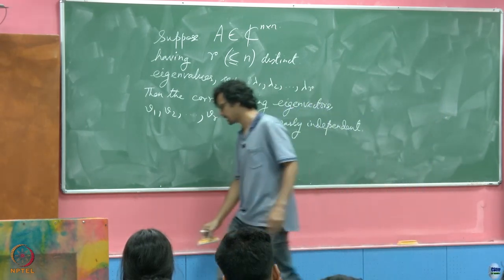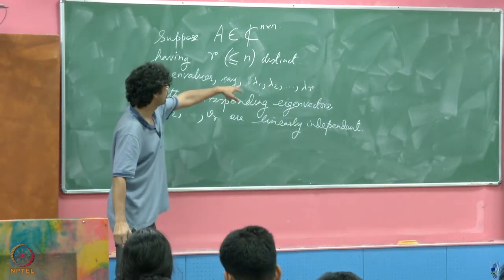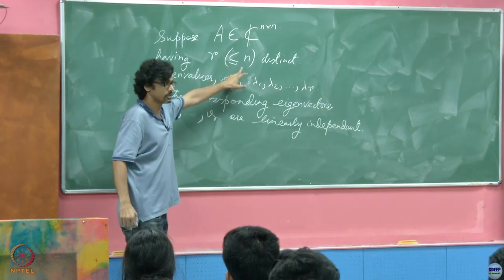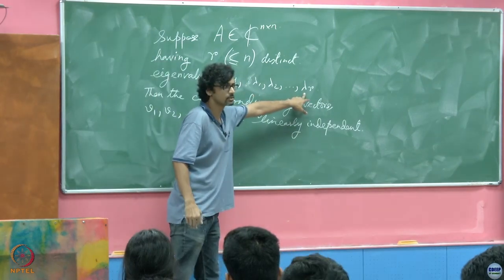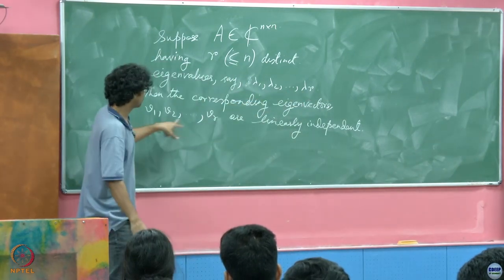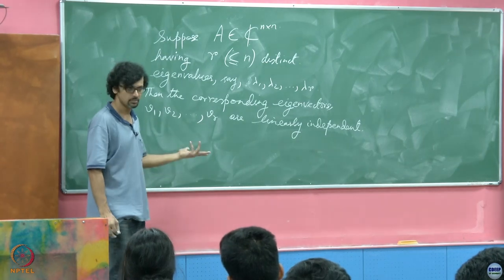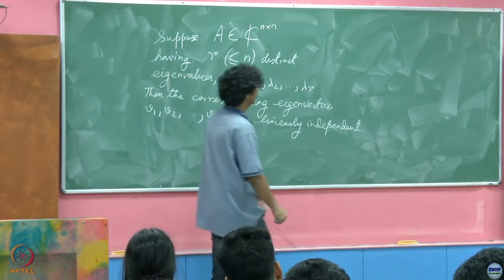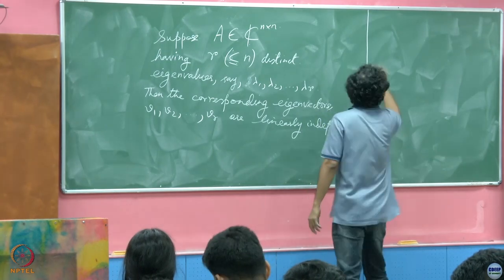But here we are saying something else. Maybe you do not have all your n eigenvalues distinct. If there are distinct eigenvalues, the corresponding eigenvectors for those will always be linearly independent. Let us try and see why this is so.